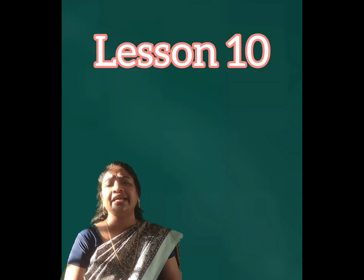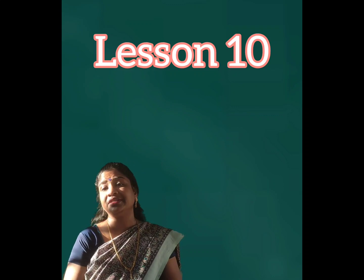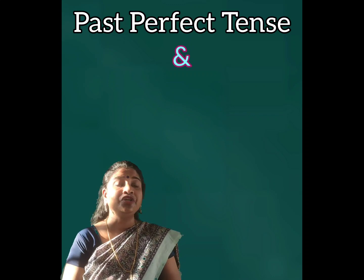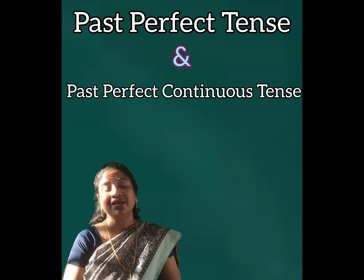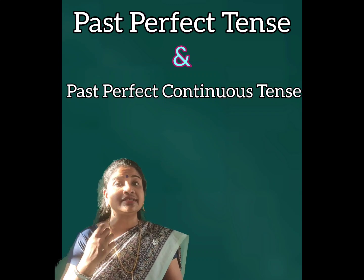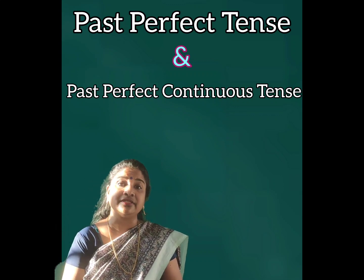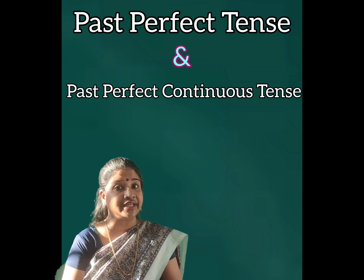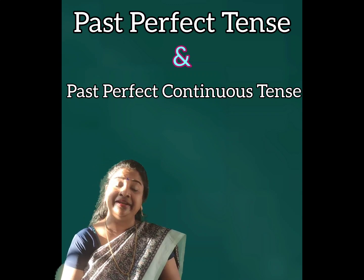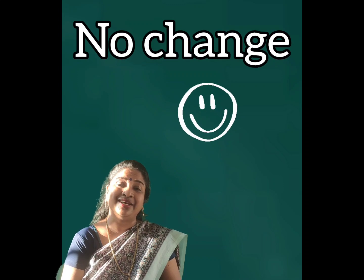Today we are going to start with lesson 10, and lesson 10 is so easy — I assure you — because I am going to be discussing only two things. Those are how the sentence changes if we are using the past perfect tense or the past perfect continuous tense. If you are changing a sentence from direct to indirect speech and that sentence is written in either of those tenses, then there would be no change in the tense. It means you just need to copy the sentence with very few minor changes.